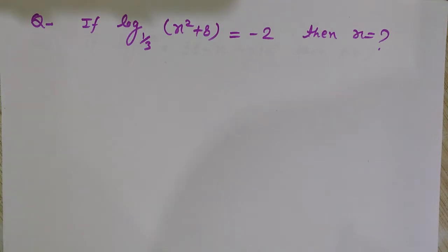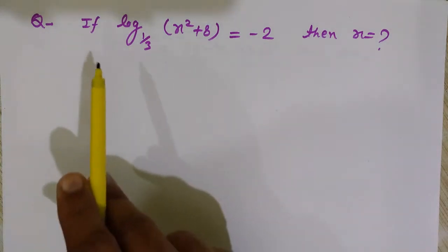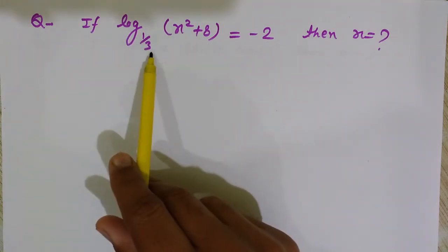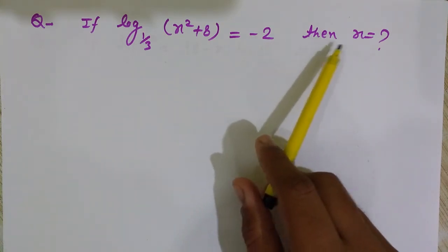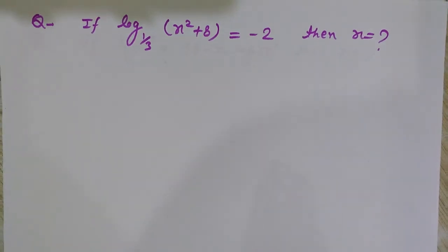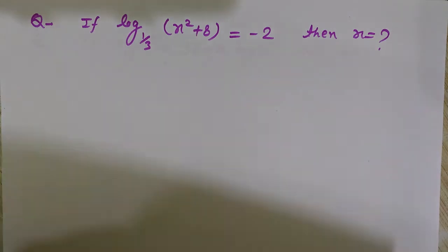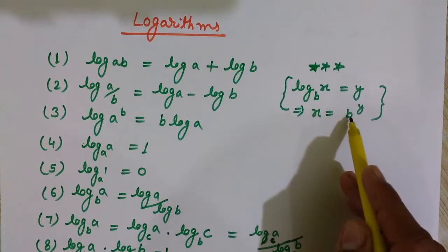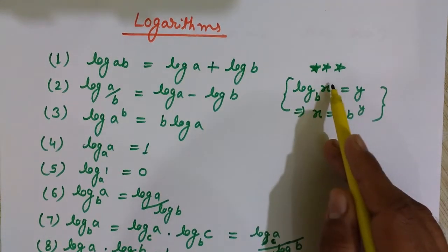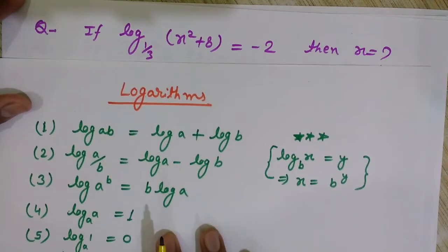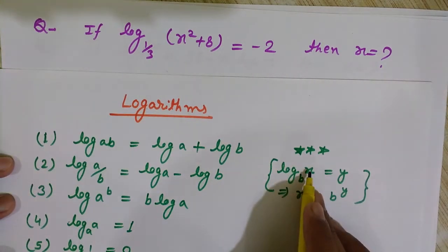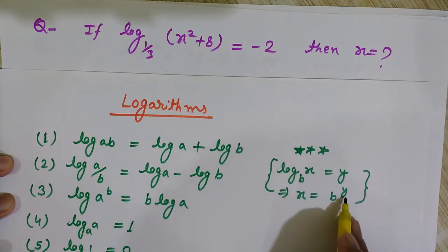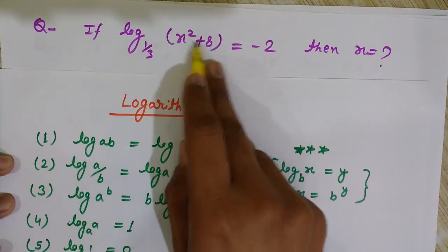Now we will see various problems to help in understanding these concepts. Our first problem is: if log of (x squared plus 8) to the base 1/3 is equals to minus 2, then what will be the value of x? We will use the basic property of log — that log of x to the base b equals y, then x equals b to the power y. At the place of this x I have x squared plus 8.